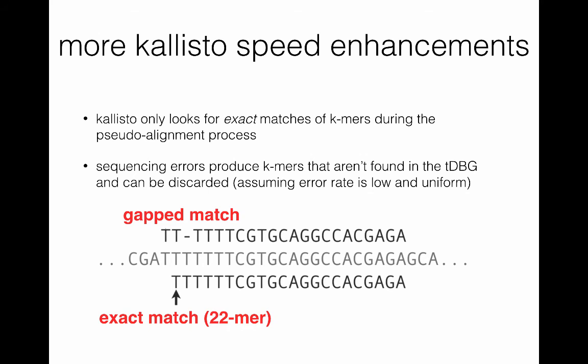Other things that make Kallisto fast include the fact that it only looks for exact matches of k-mers during the pseudo-alignment process. This exact matching is much easier algorithmically than allowing for mismatches. Additionally, sequencing errors produce k-mers in the reads that are just not found in the transcriptome De Bruijn graph, and thus they can be discarded, assuming a low error rate.